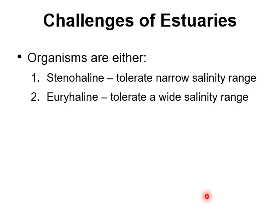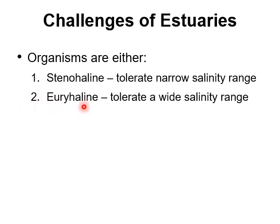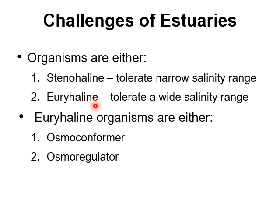That relates to how organisms in the ocean deal with salinity in general. There are organisms that are stenohaline — they can only tolerate a very narrow range of salinities. Then there are organisms that are euryhaline — they can tolerate a wide range of salinities. Things living inside estuaries would be expected to be euryhaline, because they live in an area where salinity swings up and down a lot, and they need that tolerance in order to survive.